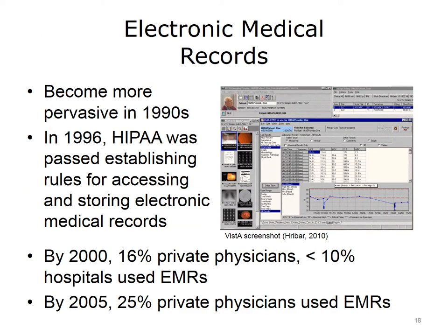As all these advances in computing and the Internet were happening, electronic medical records, or EMRs, got their foothold. More versions were being developed in the 1990s, and they became more user-friendly with the addition of graphical user interfaces. HIPAA, the Health Insurance Portability and Accountability Act enacted in 1996, included provisions for establishing standards for electronic medical records. In 2000, only 16% of private physicians and less than 10% of hospitals used EMRs. By 2005, 25% of private physicians used EMRs, and the number has since been increasing.